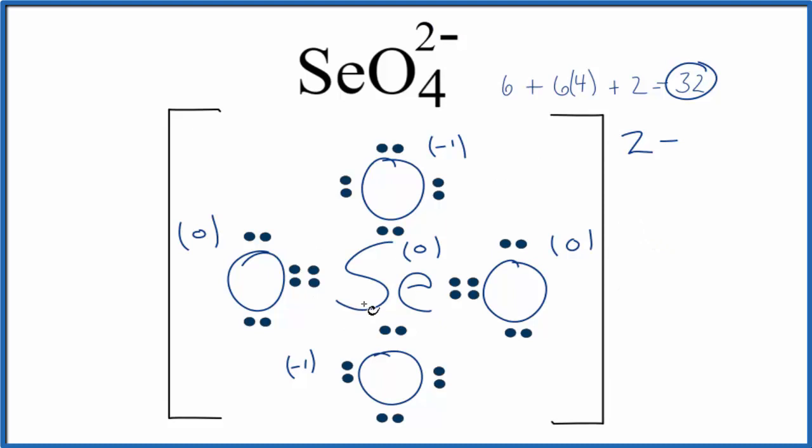Note, this will have a tetrahedral molecular geometry. So that's it. This is the Lewis structure for SeO4 2-. And this is Dr. B. Thanks for watching.